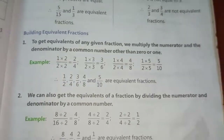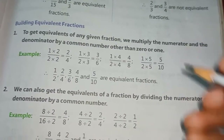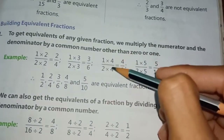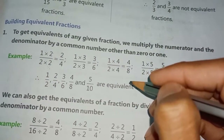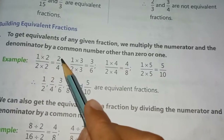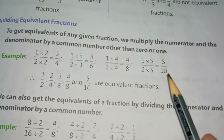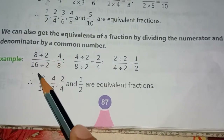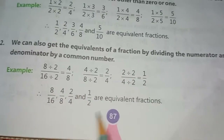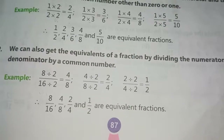Now, making equivalent fractions. There are two ways: by multiplying and by dividing. If we multiply the same number in both the numerator and the denominator — for example by 2, 3, or 4 — we get a new equivalent fraction. For example, 1 by 2 multiplied by 2 gives 2 by 4, then 3 by 6, 4 by 8, and 5 by 10 — all equivalent fractions. By dividing: 8 by 16 divided by 2 gives 4 by 8, again divided by 2 gives 2 by 4, and again gives 1 by 2 — all equivalent fractions.